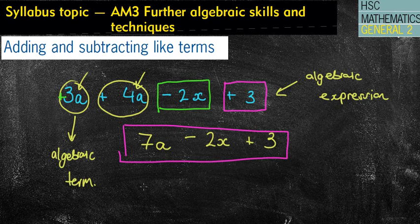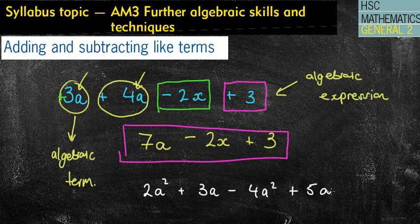Now, other more challenging ones might look like this: 2a squared plus 3a minus 4a squared plus 5a. So how many terms do I have in this expression? I have four terms. And which are the like terms? Some people might say they are all like terms.